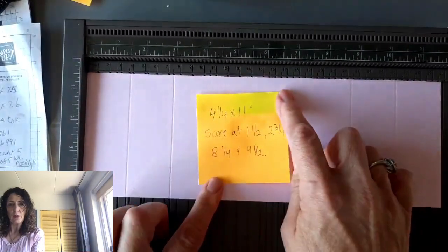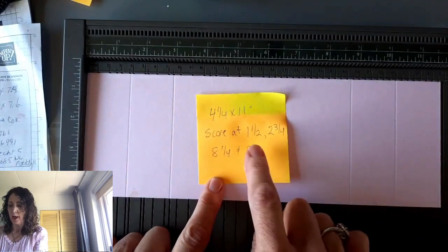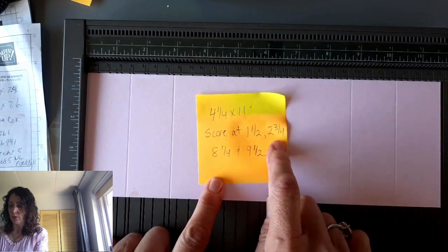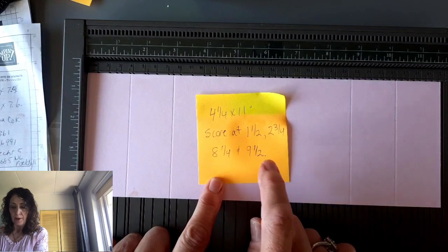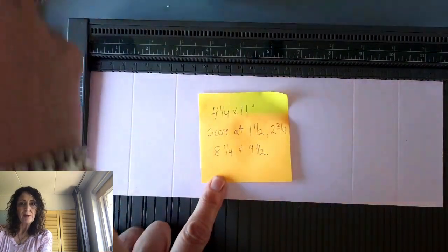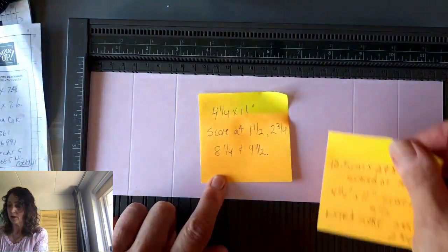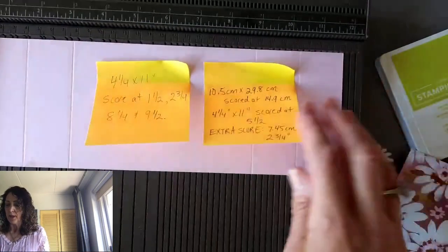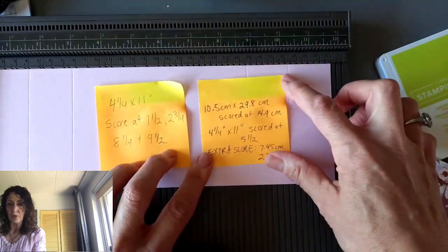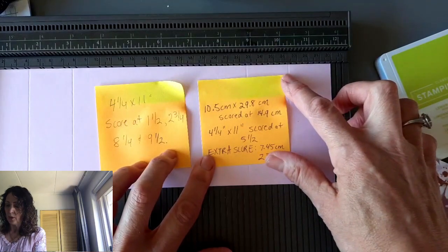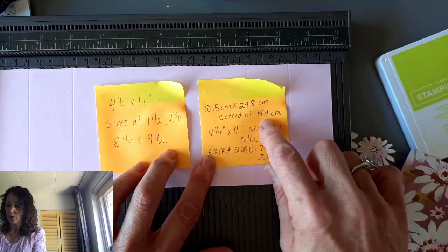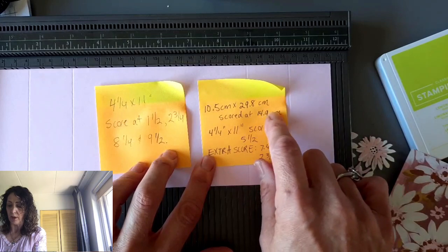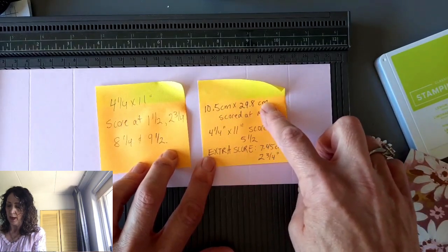This is our Simply Scored tool, and I'm using the insert with the metric. So here are the measurements for the card. It's four and a quarter by 11 inches, scored at one and a half, two and three quarters, eight and a quarter, and nine and a half. But because I'm in Europe, I don't have access to this color in eight and a half by 11, so I did it in centimeters.